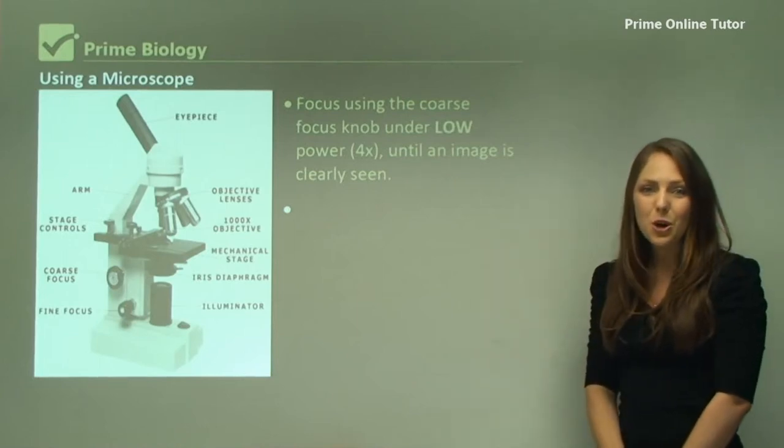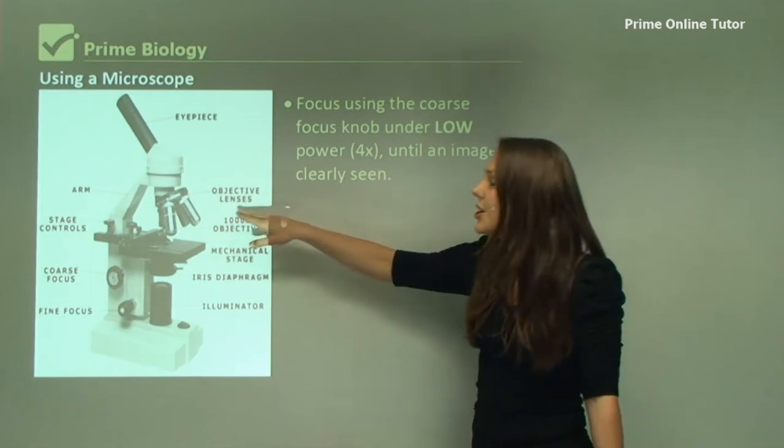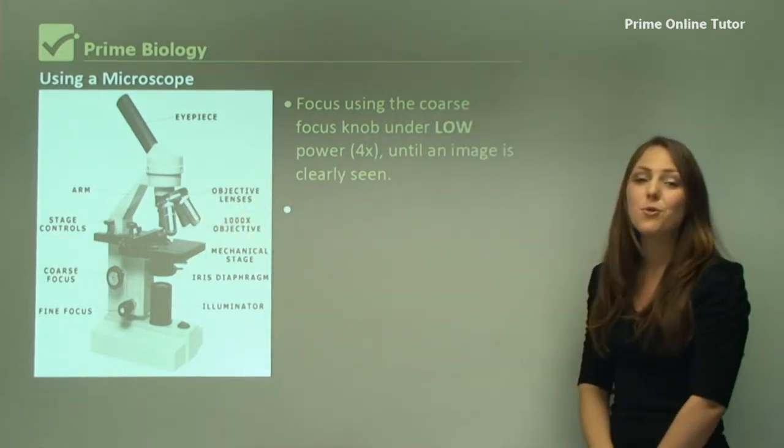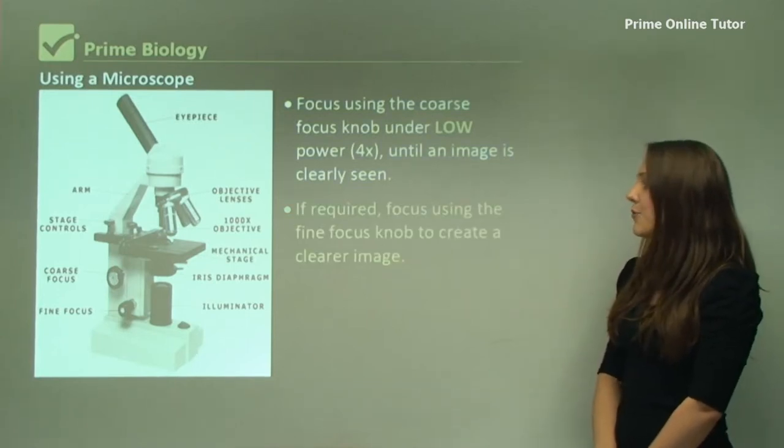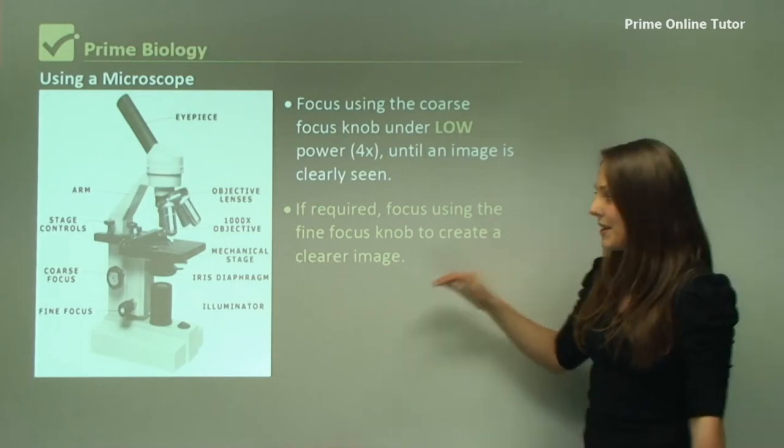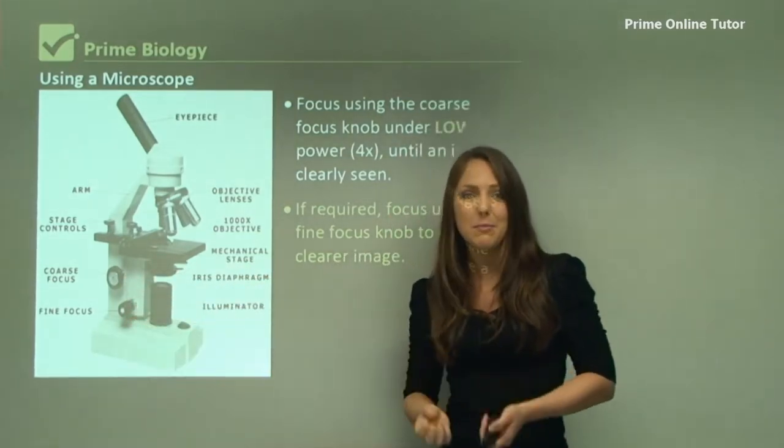You need to focus on the low power first. You do this with the low power objective lens. So you turn this to the smallest objective, which is 4x magnification. If required, focus using the fine focus knob to create a clearer image. Here's the coarse focus, and the fine focus makes the image a little bit clearer.